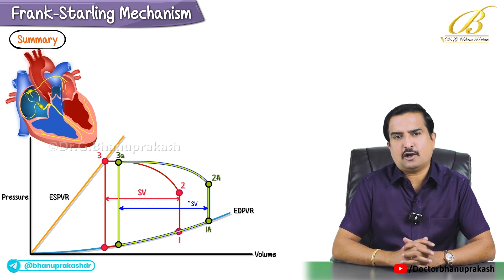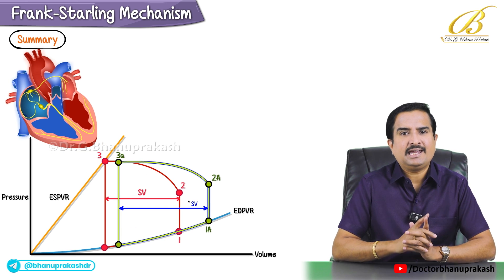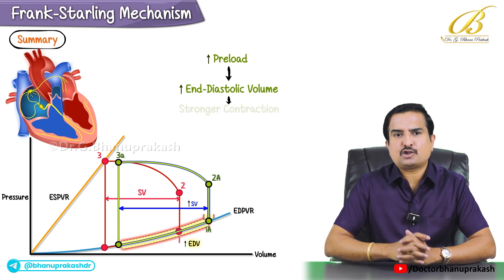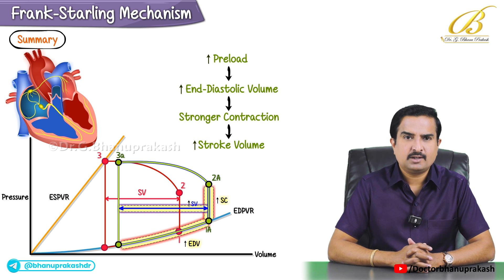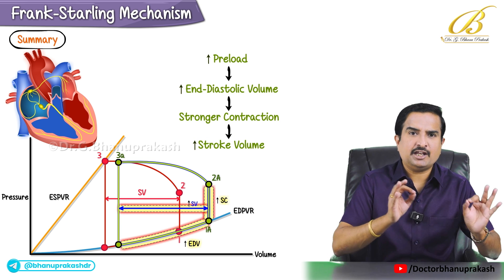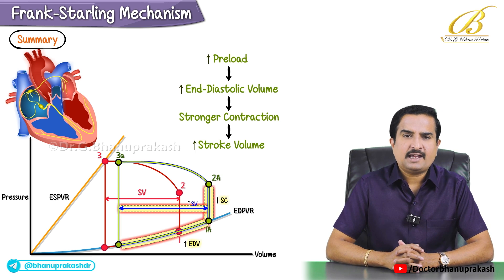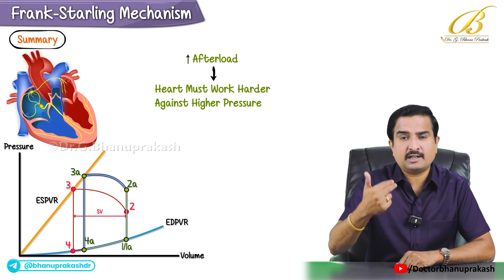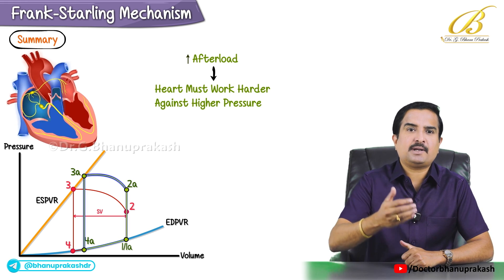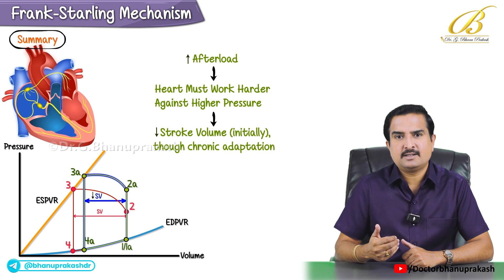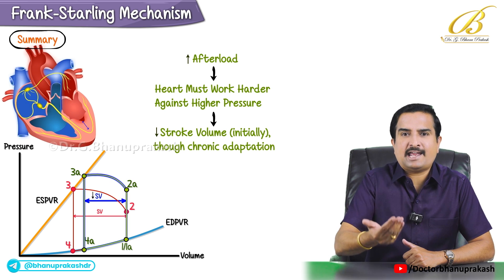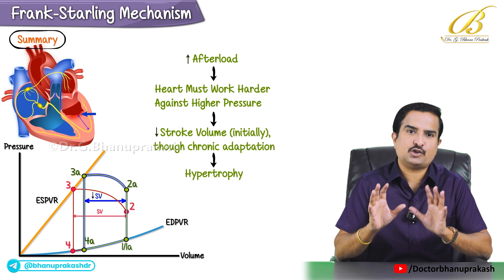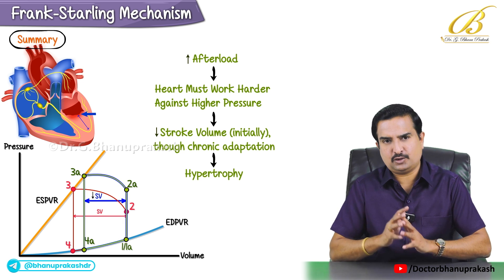Here is a handy summary. An increase in preload leads to an increase in end-diastolic volume, resulting in stronger contraction and increased stroke volume — so the take-home point is: increase in preload equals increase in stroke volume. Conversely, an increase in afterload means the heart must work harder against higher pressure, typically causing decreased stroke volume initially, but through chronic compensatory adaptation it can lead to hypertrophy.